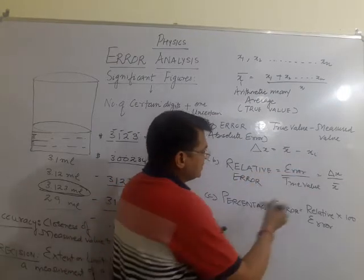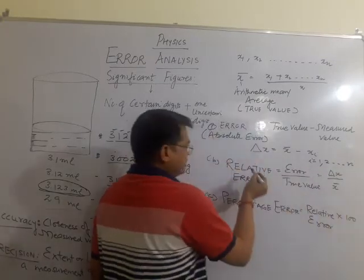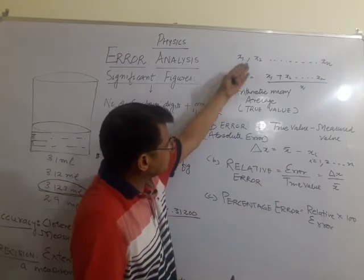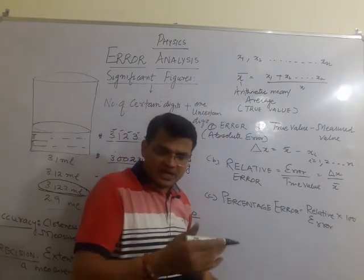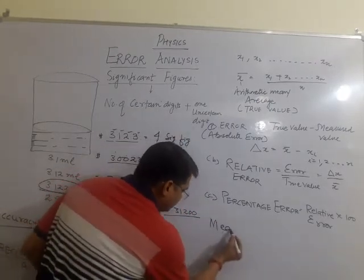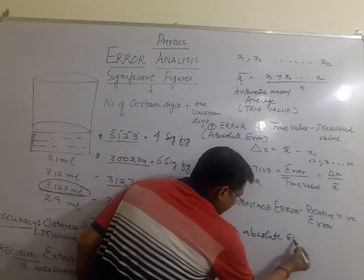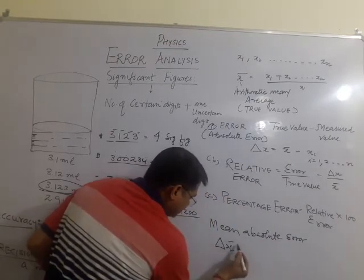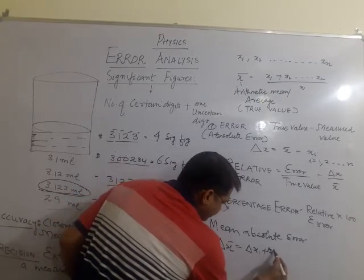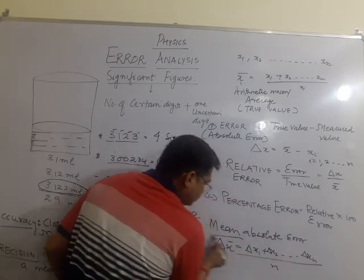The index i may be 1, 2, or up to n. The mean absolute error can be found for the first reading, the second reading, and so on up to the nth reading. The mean absolute error is the arithmetic mean of all the absolute errors — delta x1, delta x2, up to delta xn. This mean is called the mean absolute error.